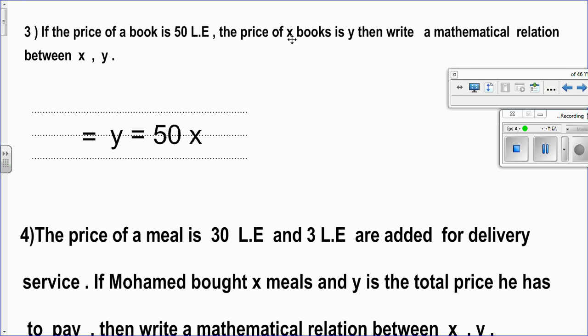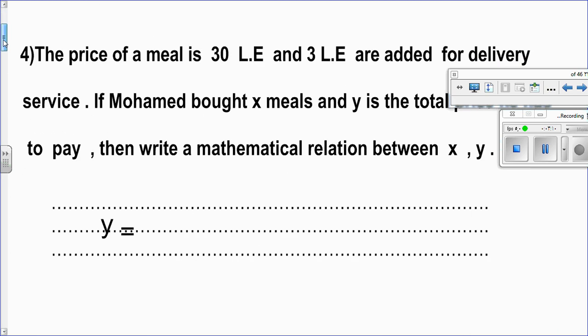Y is the price, x books is the number of books. And y is the total price. And the price of one book is 50. So, to get y, the relation which will give you y, it's 50 multiplied by x, 50 times x, which is 50x.